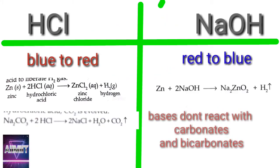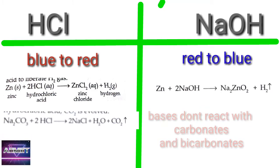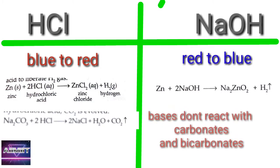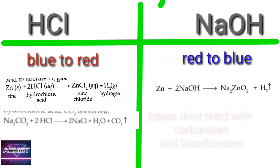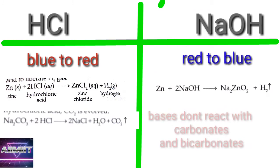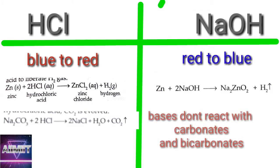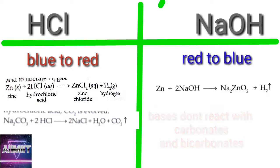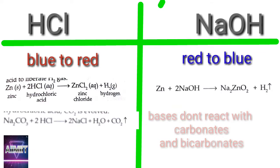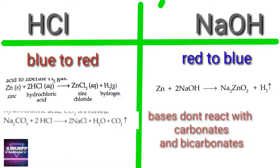Experiment two: acids and bases differentiation, discussed using HCl and NaOH. HCl turns blue litmus to red, and NaOH turns red litmus to blue. Coming to reactions with metals: acids plus metals give salt plus hydrogen gas, and bases plus metals also give salt plus hydrogen gas.